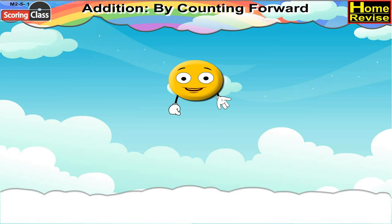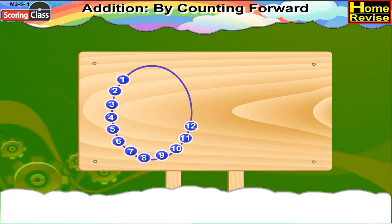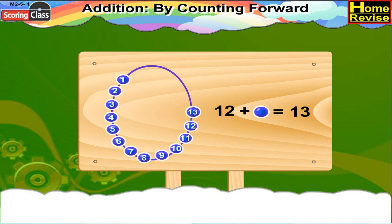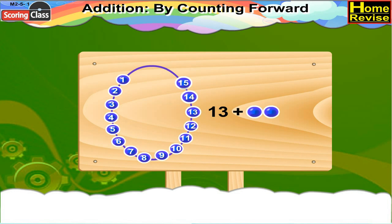Addition by counting forward. Count forward 1 bead after 12 beads. Now here there are 12 beads. 1 more bead makes it 13 beads. Count forward 2 beads after 13 beads. Now here are 13 beads. If 2 more beads are added, it becomes 15 beads.